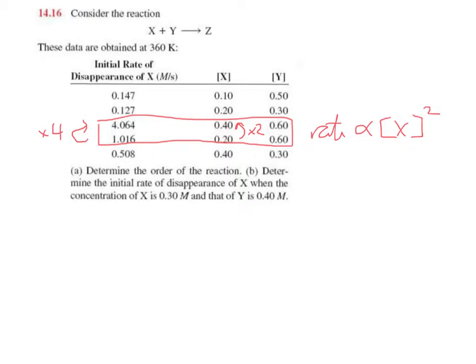Let's try and find another pair of experiments where the concentration of X doesn't change, but the concentration of Y does. We can look at maybe the third and the fifth one. If we compare these two, we can see the concentration of X doesn't change, but going from the bottom pair to the top pair, we've doubled the concentration of Y.